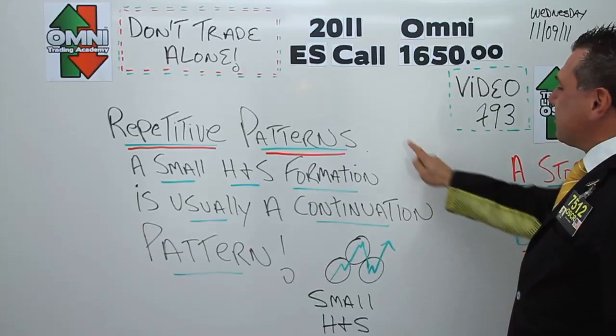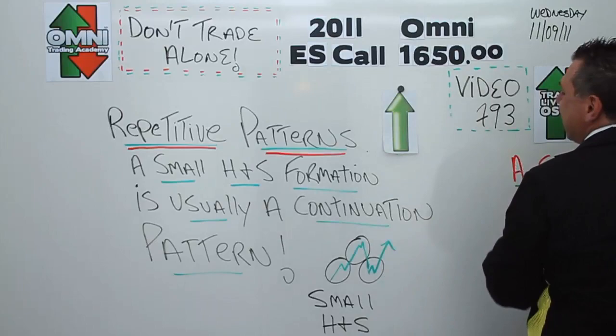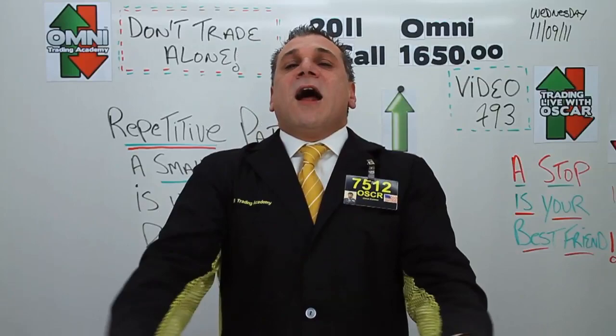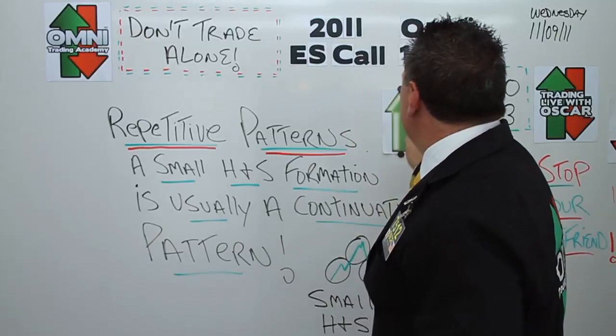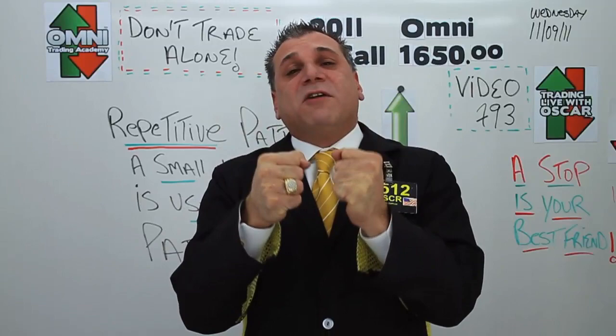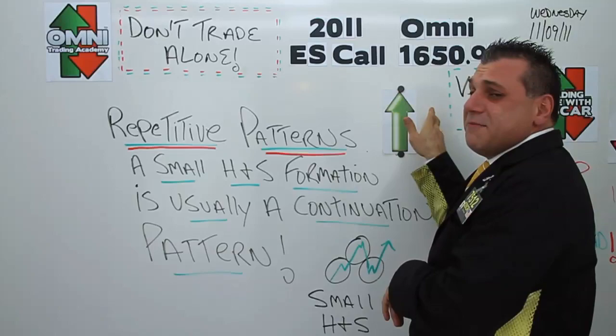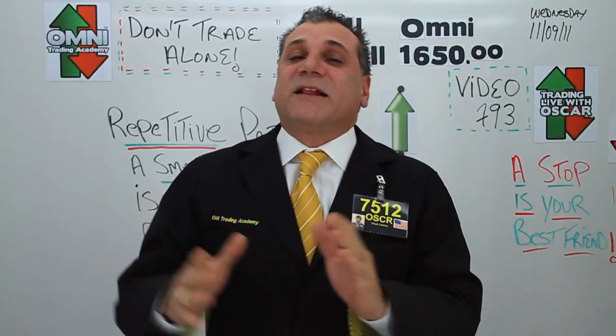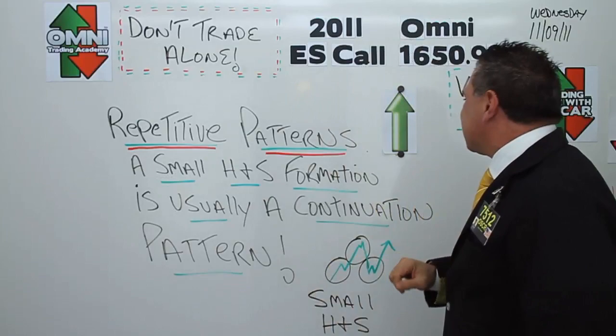First thing on the board: we were able to convert that red Omni we had the other day to a green Omni, and that's what we were hoping for. On Sunday night I brought you some analysis and said traders, right now we have a red Omni and there's a little baby bear flag — we're going to use that to take the elevator ride down on Monday, but then we expect it to turn, and I flipped the red Omni pointing straight up.